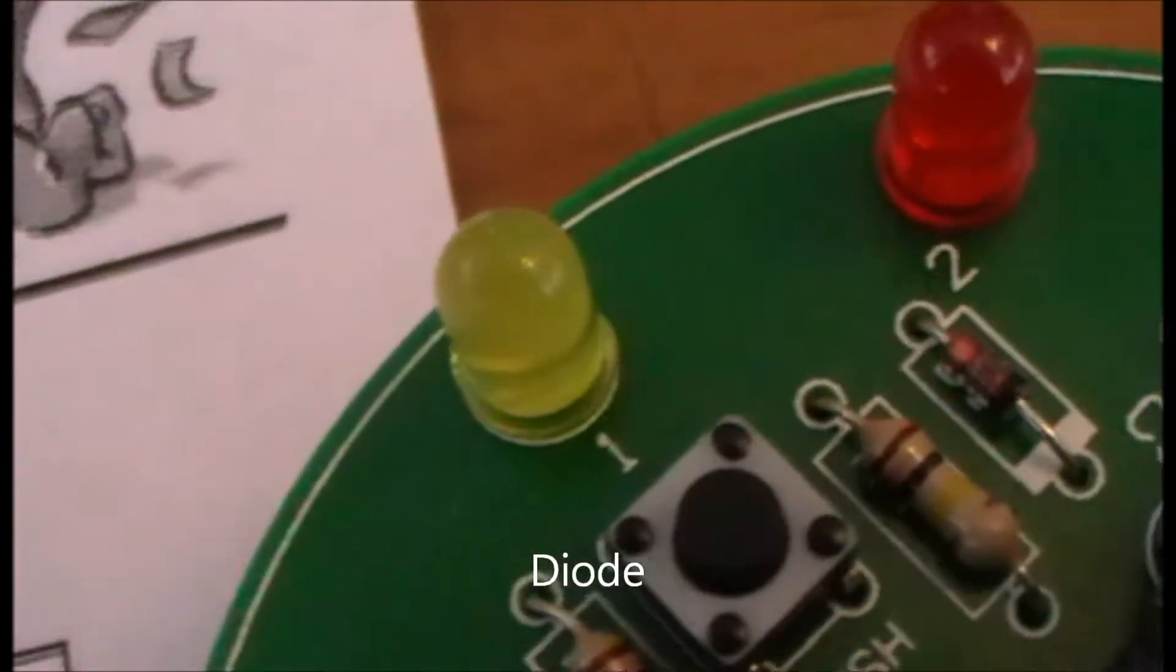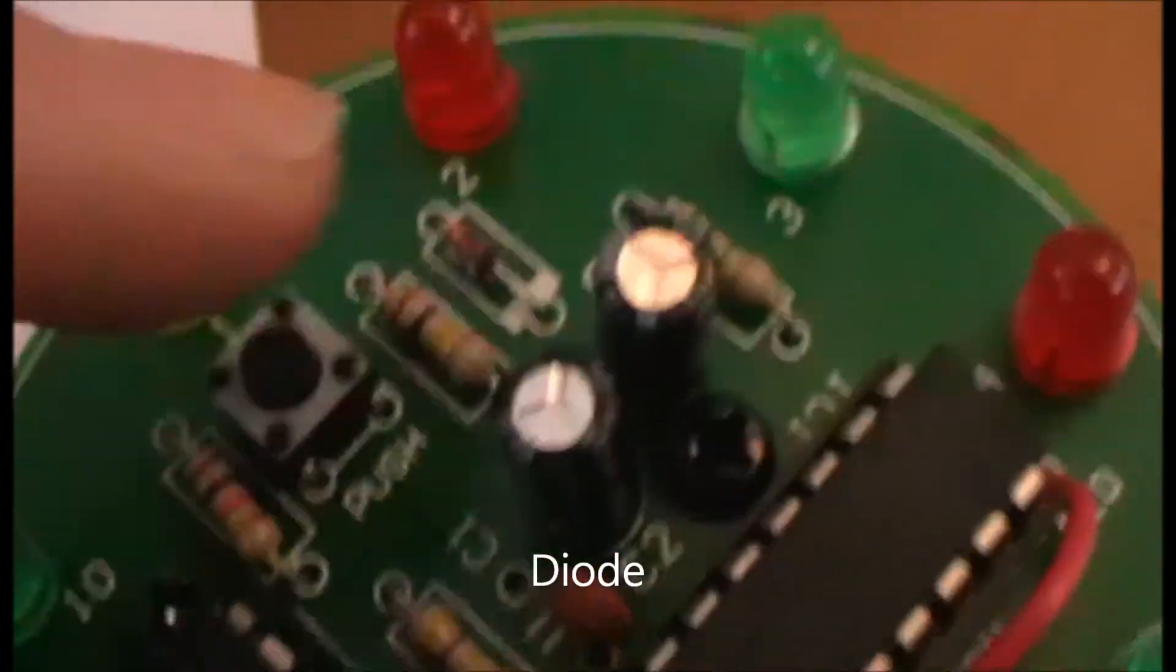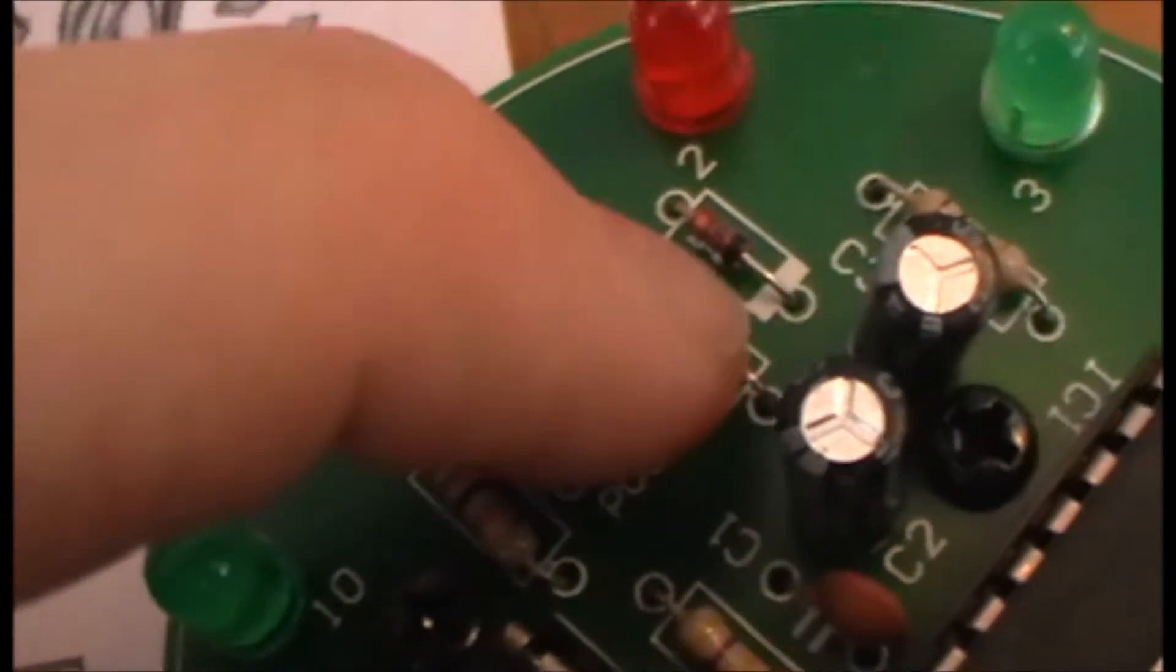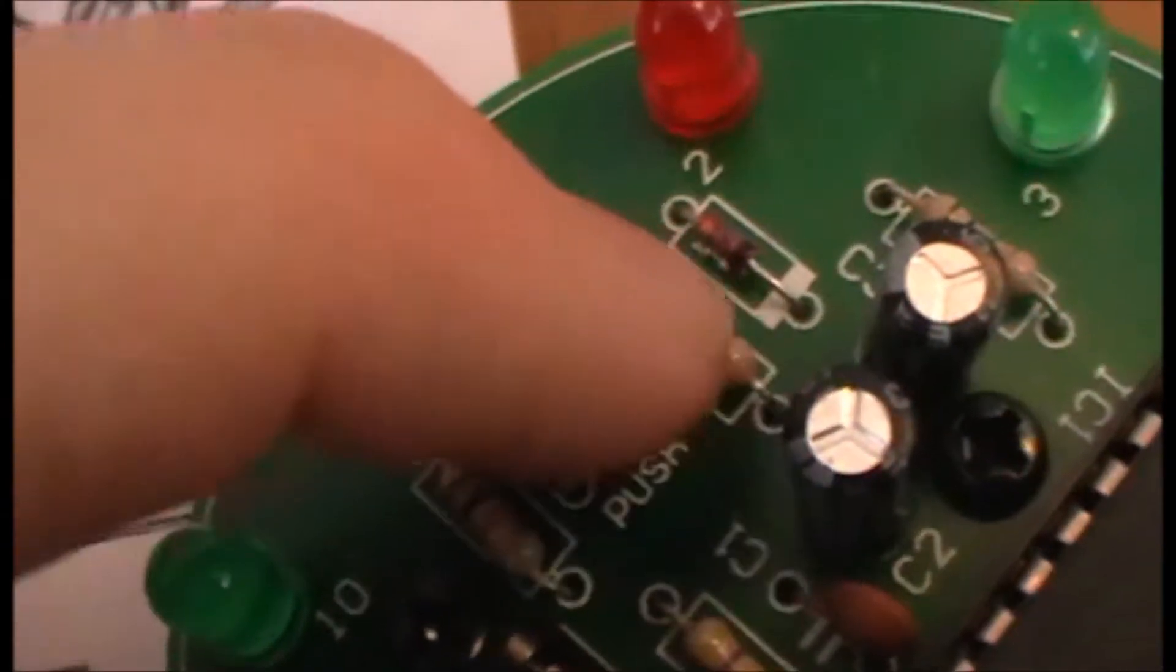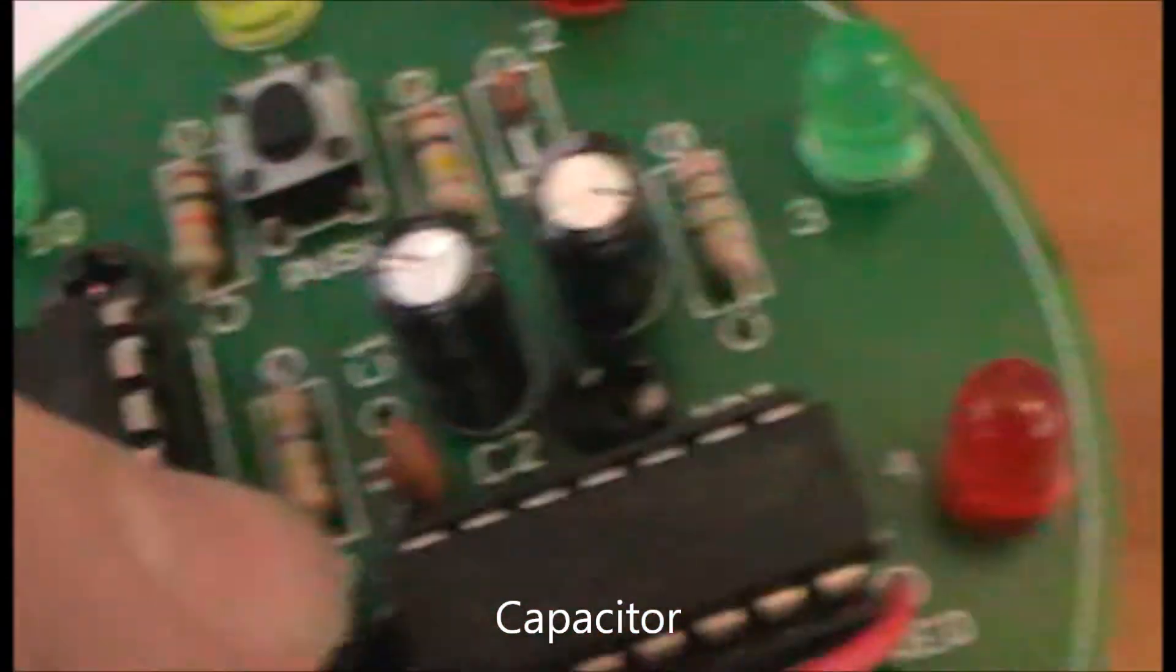Up next is the diode, and it goes in D1. Make sure that the black stripe on the diode matches the white one on the board. The capacitor goes in C1.